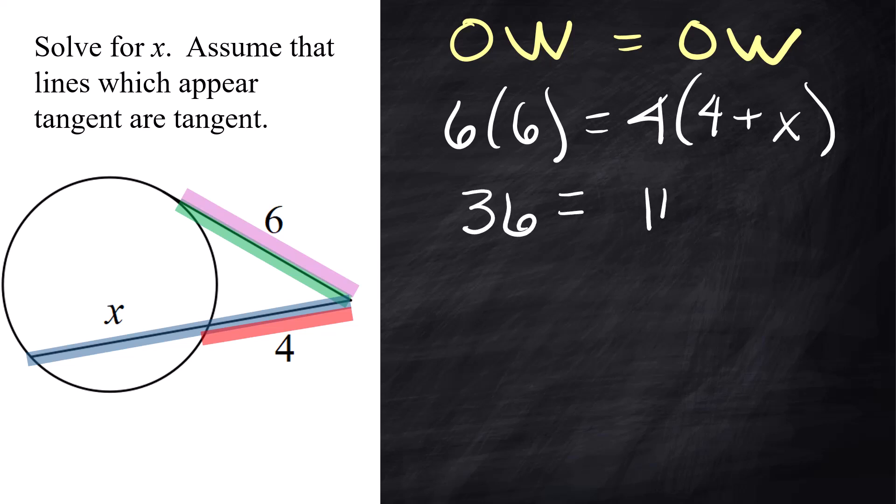Multiplying, we're going to get 36 equals 16 plus 4x. I want to subtract 16 from both sides. 36 minus 16 is 20. That equals the 4x because the 16 is canceled out. Divide 20 by 4 in your head. x equals 5.